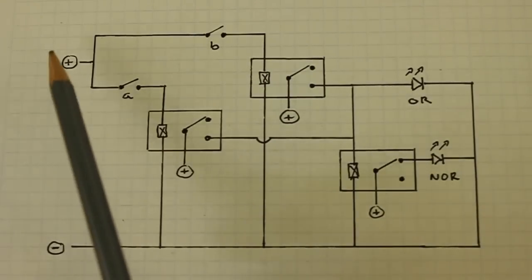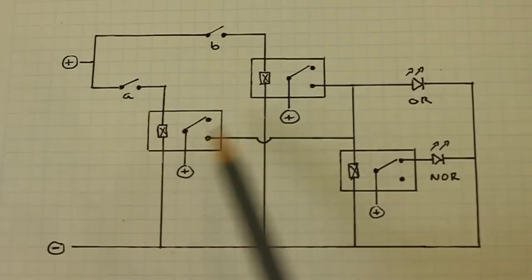We have positive connected here and in each of the common contact of the relays. And here's the negative.